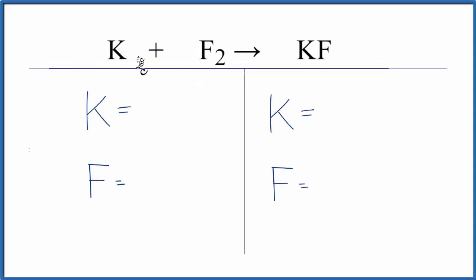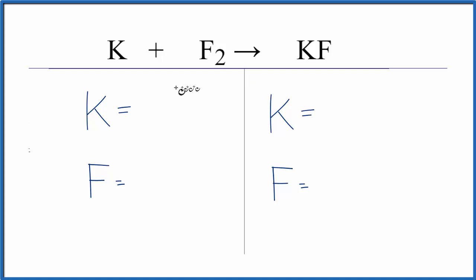In this video, we'll balance the equation K plus F2 yields KF. That's potassium plus fluorine gas yields potassium fluoride. So let's count the atoms up on each side of the equation, and then we'll balance it.